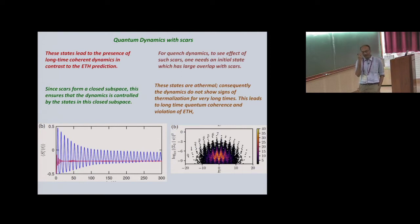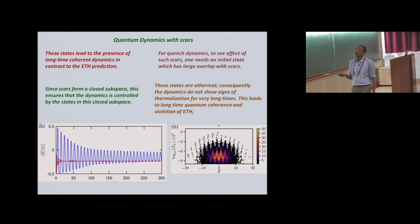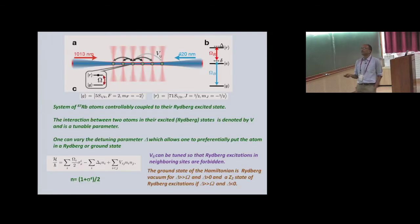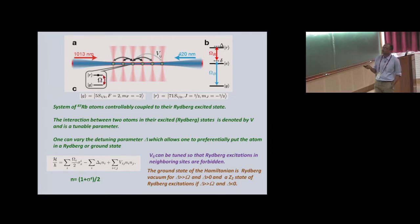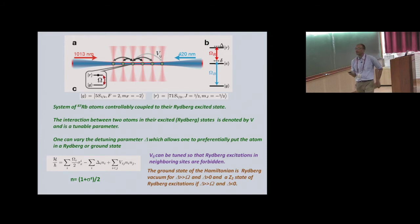Here is one example: starting from a state with large overlap with scars, you see long-time oscillatory dynamics; but starting from a state without large overlap with scars in the same system, you see very rapid thermalization to the ETH-predicted value. This is all known from typical quench experiments. This was motivated by an experiment on the Rydberg chain, where you take Rydberg atoms on a chain with two states — a ground state and a Rydberg excited state, typically 87Rb atoms — and the interaction between atoms in Rydberg states is a dipole interaction denoted by V, which is tunable in the experiment.